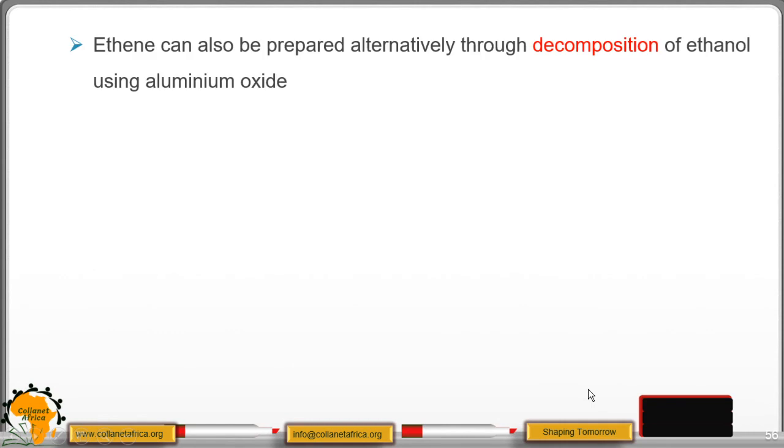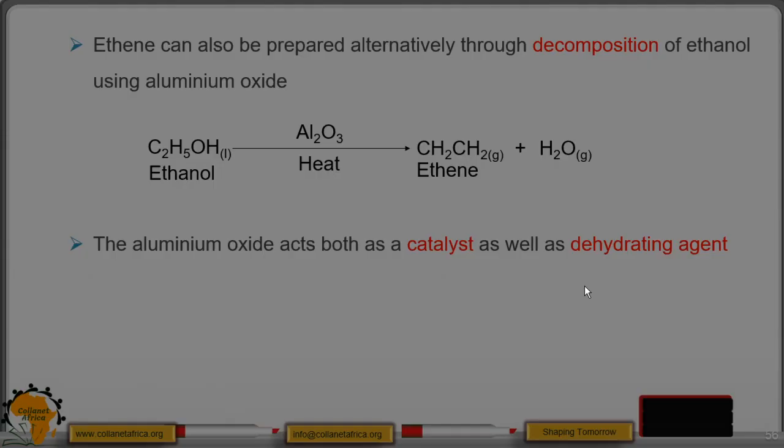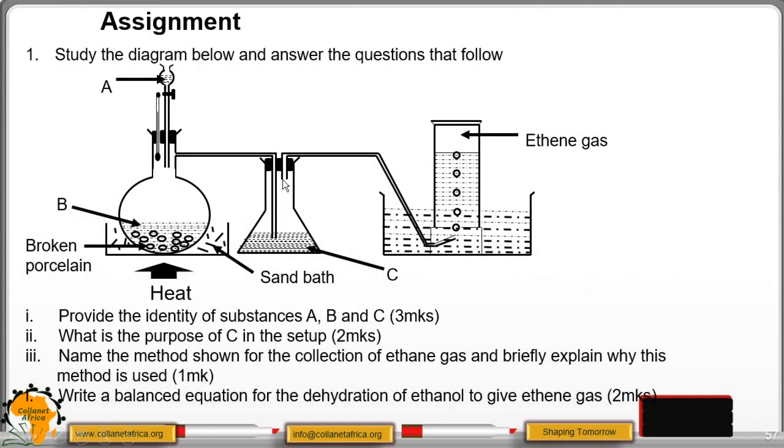Ethene can also be prepared alternatively through decomposition of ethanol using aluminum oxide. This is the reaction. We have ethanol. We have aluminum oxide. Remember we say that aluminum oxide acts as a catalyst as well as a dehydrating agent. So it is going to dehydrate ethanol just in a similar way as sulfuric acid does to form ethene and H₂O. The aluminum oxide acts as a catalyst and a dehydrating agent.